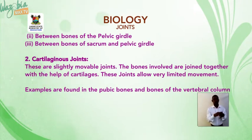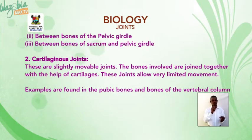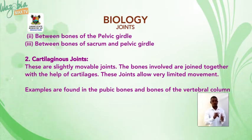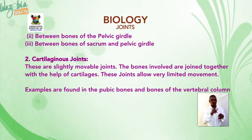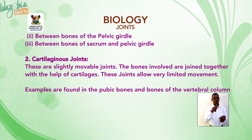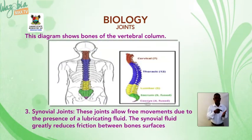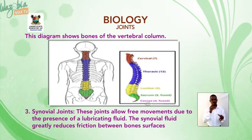Cartilaginous joints are slightly movable joints. The bones involved are joined together with the help of cartilages. These joints allow very limited movement. Examples are found in the pubic bones and bones of the vertebral column.